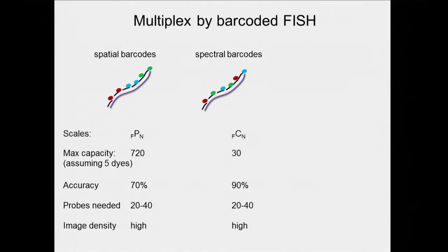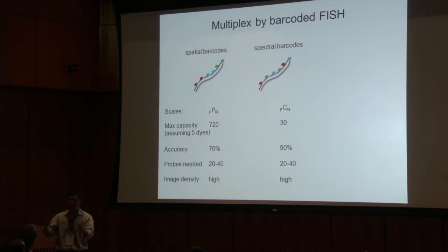We also tried spatial barcoding, using ordered barcodes on the RNA resolved by super resolution, but the accuracy is not very good. So we have space and color as dimensions — and there's a missing column: time. I'll tell you about this new method of temporal barcoding that gives us much, much higher capacity.